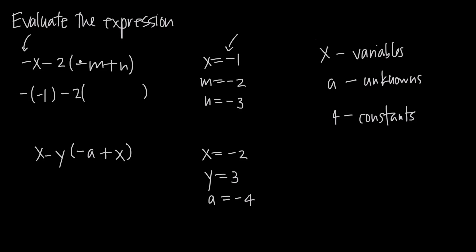Then we have minus 2 and then parentheses around negative m plus n. For negative m, we need to keep both negative signs, so we'll have a negative negative 2 when we put parentheses around m and plug in this negative 2 value for m. Then we plug in negative 3 for n, so we'll say plus, then in parentheses, negative 3. Now that we have everything plugged in, it's just a matter of order of operations. We do the values inside our parentheses first. A negative negative 2 tells us we're taking the opposite of negative 2, which is a positive 2.